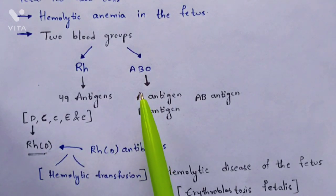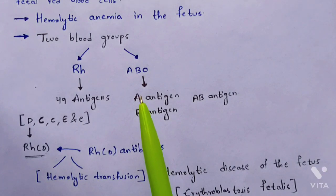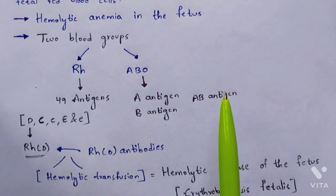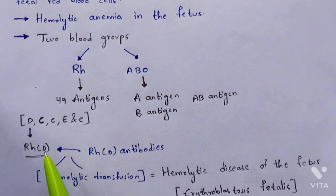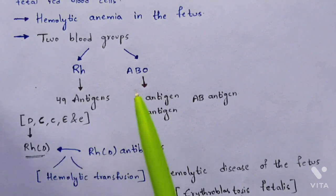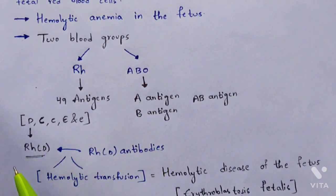Consider two types of persons: one with A-positive blood group and one with A-negative blood group. The A-positive person has both A antigens and RhD antigens on their red blood cells. The A-negative person has A antigens but lacks RhD antigens. This distinction — the presence or absence of the RhD antigen — is one of the most important points to remember.